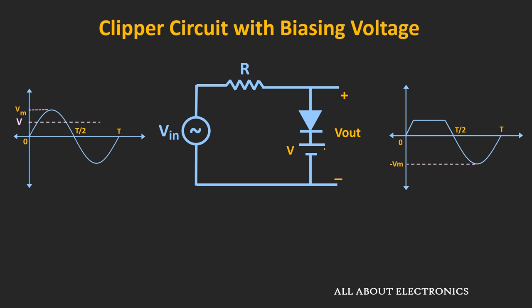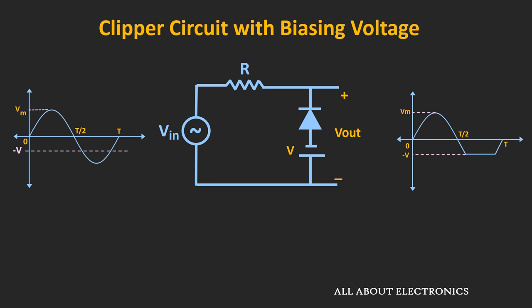If this diode is non-ideal, the actual waveform will look slightly different. This diode will conduct whenever the input voltage is greater than V plus 0.7V, and the waveform will get clipped at V plus 0.7V. This circuit is the clipper circuit with a positive biasing voltage. Similarly, we can also design a clipper circuit with a negative biasing voltage such that it can clip the negative half cycle at a certain voltage level.